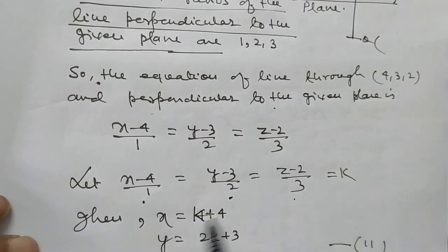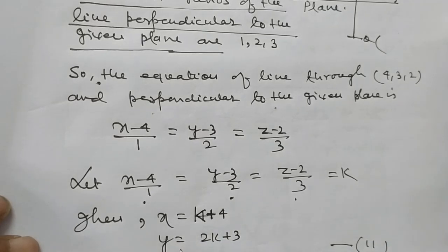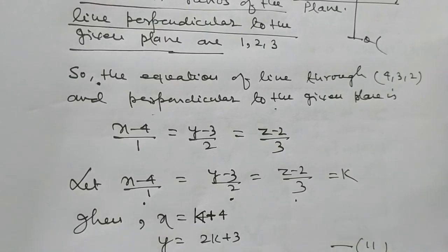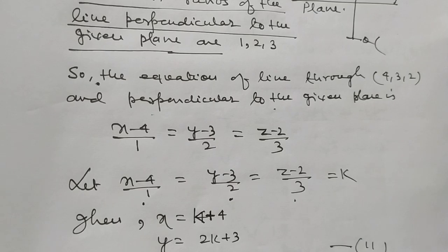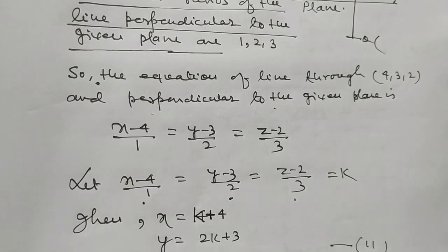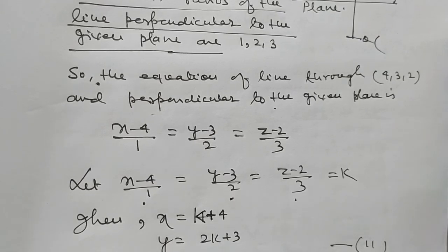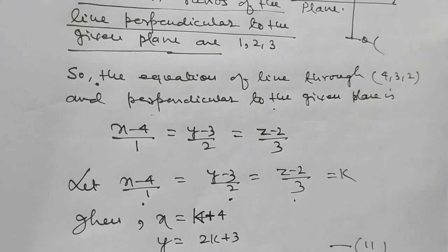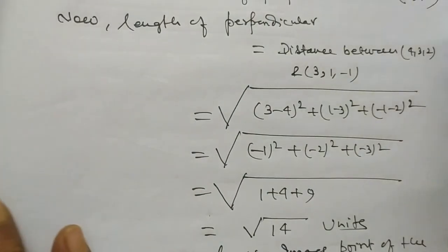The equation of the line through (4, 3, 2) and perpendicular to the given plane is: (x-4)/1 = (y-3)/2 = (z-2)/3 = k. Then x = k+4, y = 2k+3, and z = 3k+2. From substituting into the plane equation: (k+4) + 2(2k+3) + 3(3k+2) = 2. By putting the value of the general coordinate in the equation of the plane, we can get the value of k.